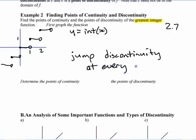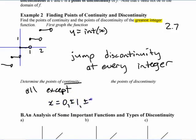Okay, so every integer, that's where there's a jump discontinuity, right? That's the only reason I wanted to show you that. Points of continuity is all the other points, right? All except x equals 0, plus or minus 1, plus or minus 2.